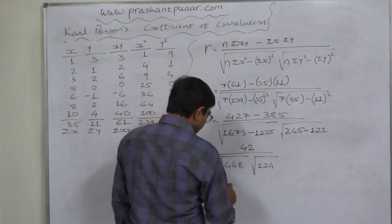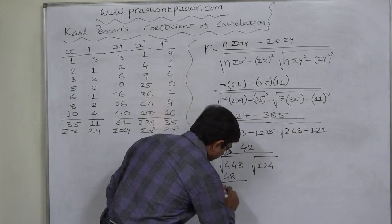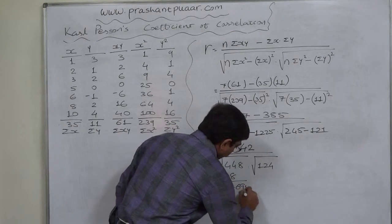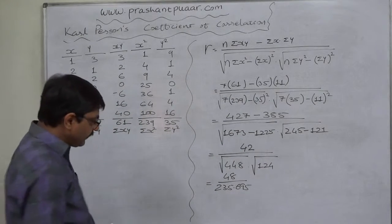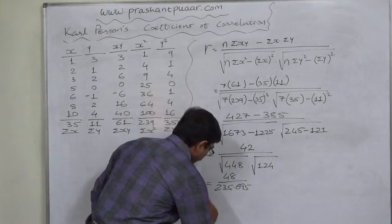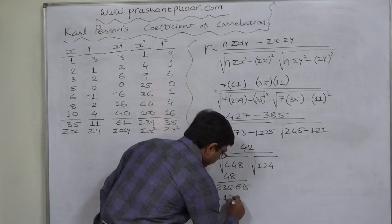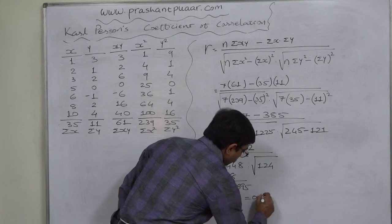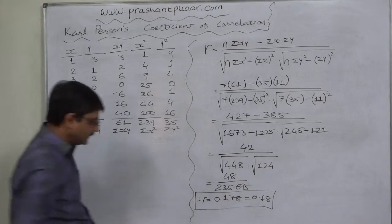Let us multiply 448 and 124, and then take the square root of it. That is 235.695 approximately. The last fraction is 42 divided by 235.695. The coefficient of correlation comes to 0.178, or 0.18 if you write the answer in two decimal places.